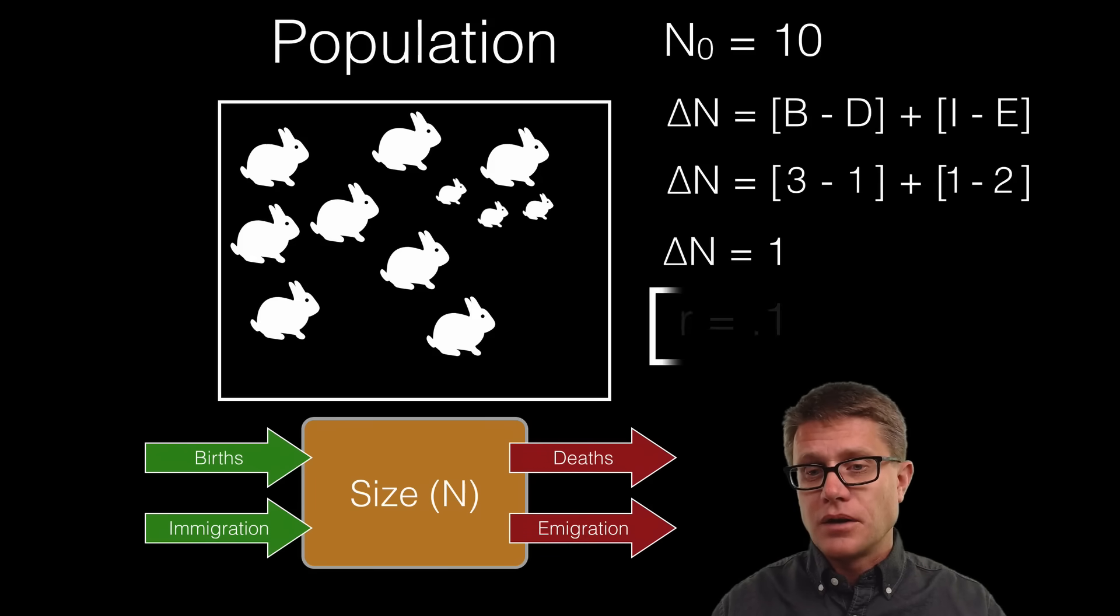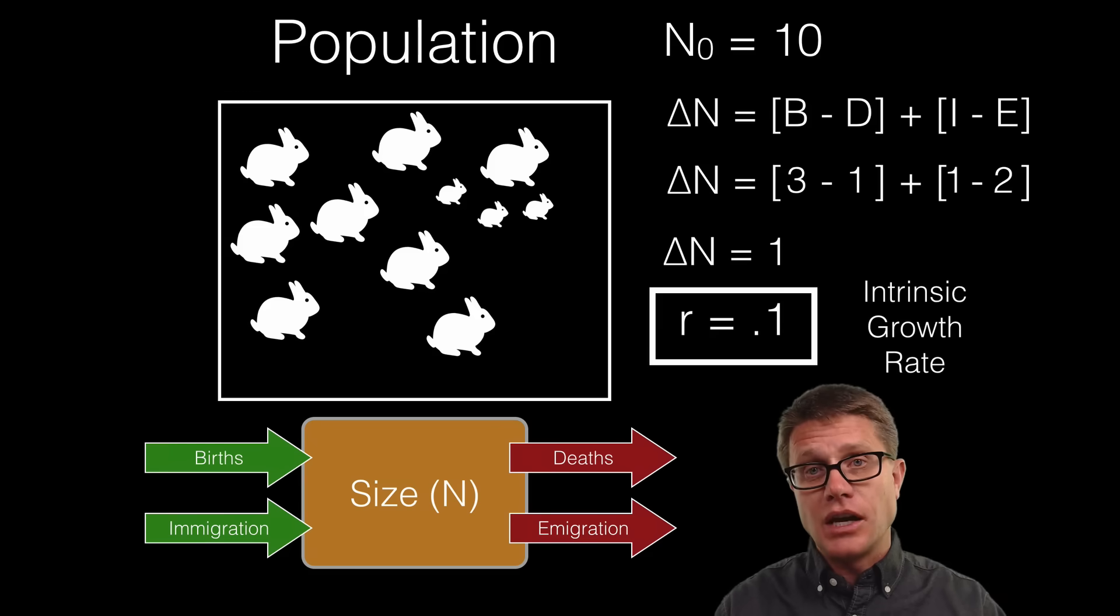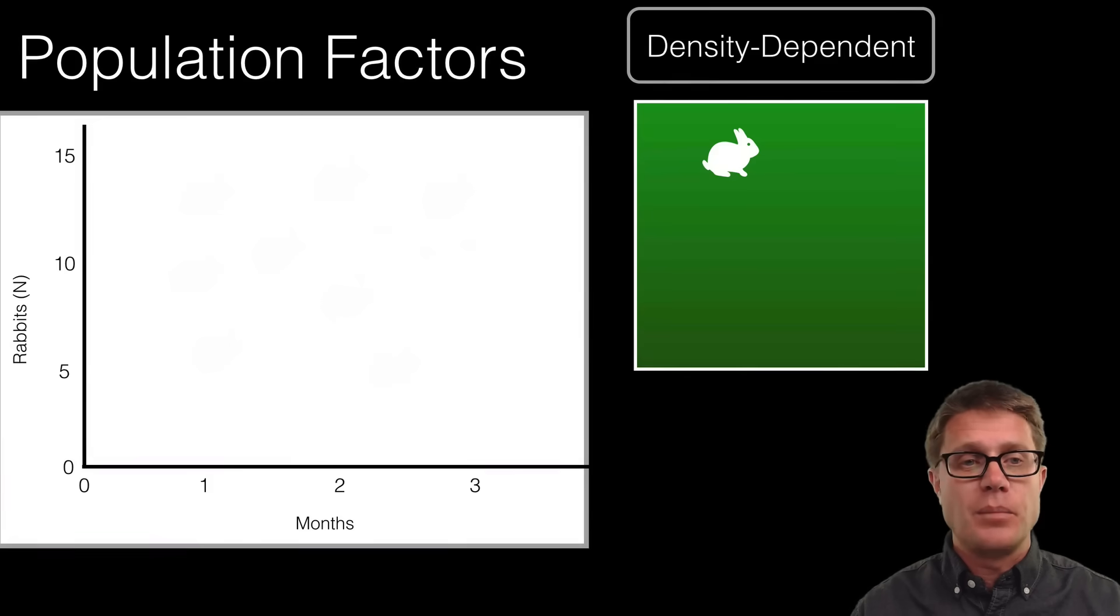Now what is the growth rate? The growth rate is going to be the change divided by the initial population. So 1 divided by 10 gives us a 10 percent growth rate. Or 0.1 is our growth rate. We call that the intrinsic growth rate. And as long as we have no other factors outside that population, that will remain constant over time. And you could solve a really hard problem. If we have a million people in an area, 100,000 are born, 10,000 die, if you are given the immigration and emigration, you should be able to calculate r for that population.